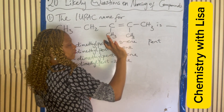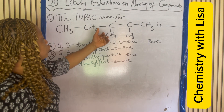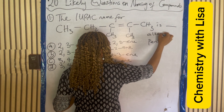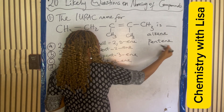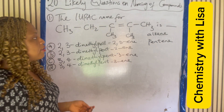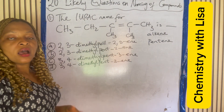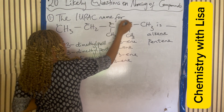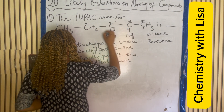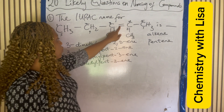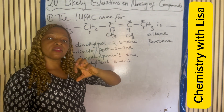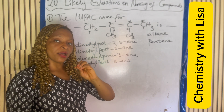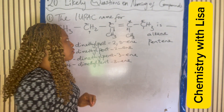Since it is five carbon atoms, that gives us 'pent.' For the functional group, this is the alkyne family, so we add 'yne.' There are substituents present, and we will number using the least possible number. We need to make the functional group have the least possible number, lower than the substituents.